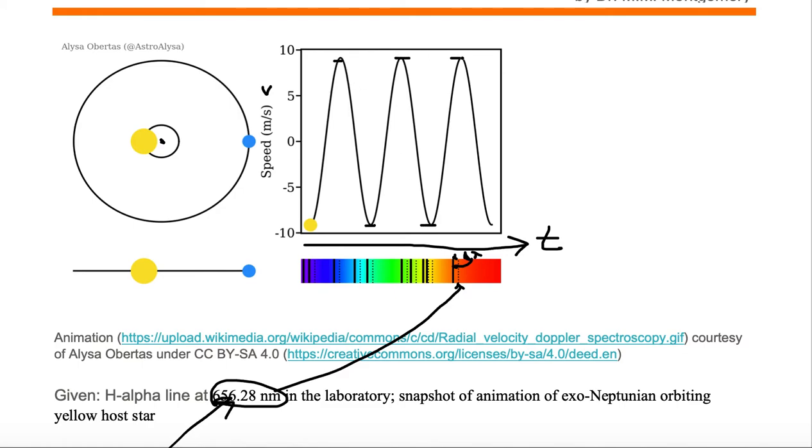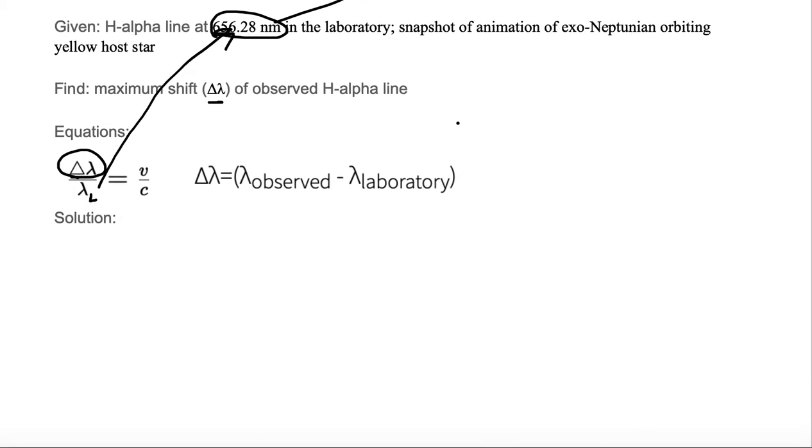We can see that the maximum value in either direction, positive or negative, is going to be around 9 meters per second. And that's going to be our maximum v. So we're going to use our equation of v over c is equal to delta lambda over lambda.